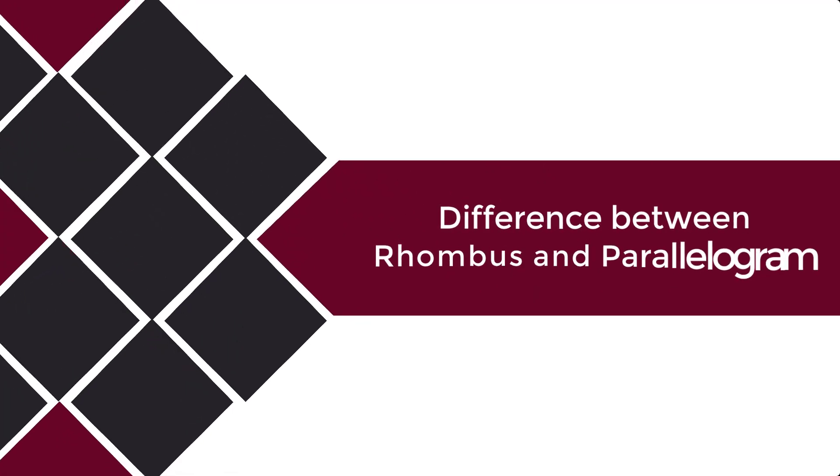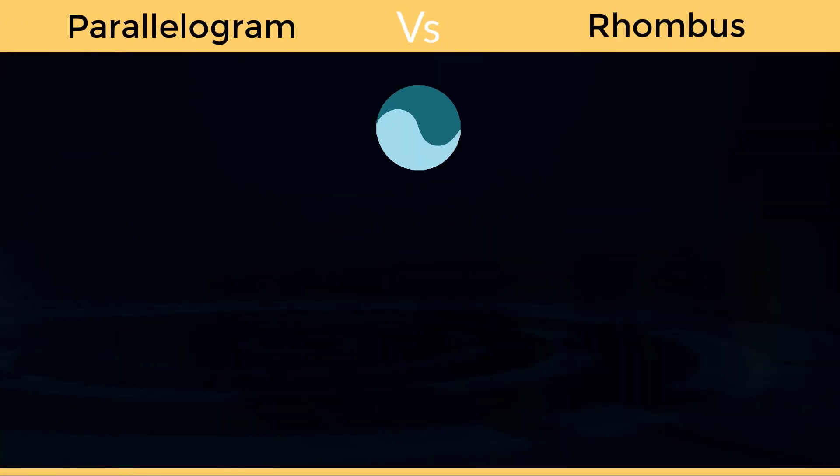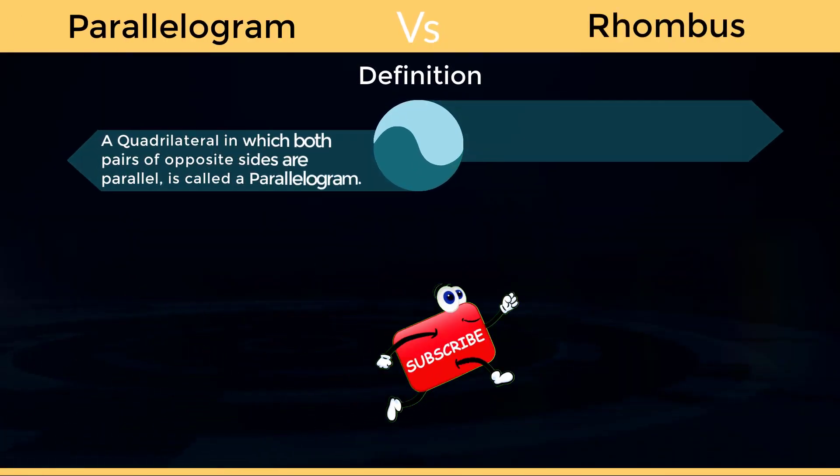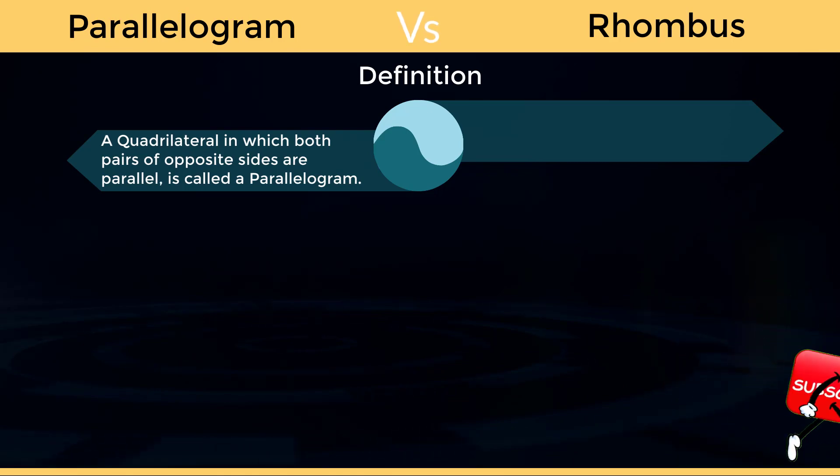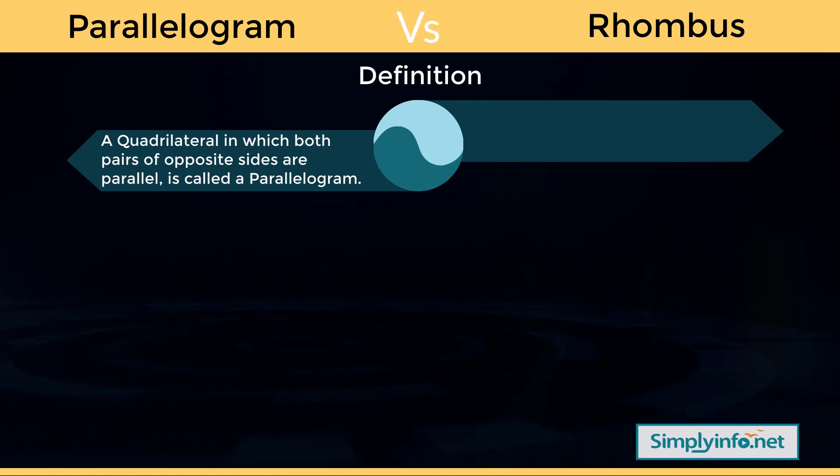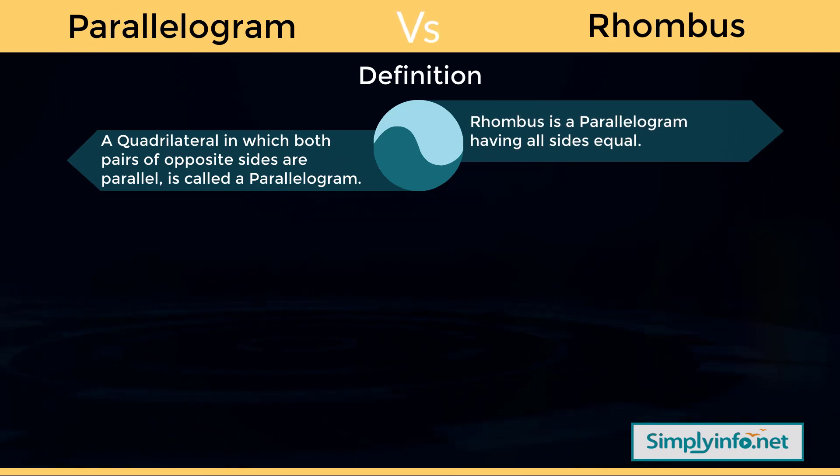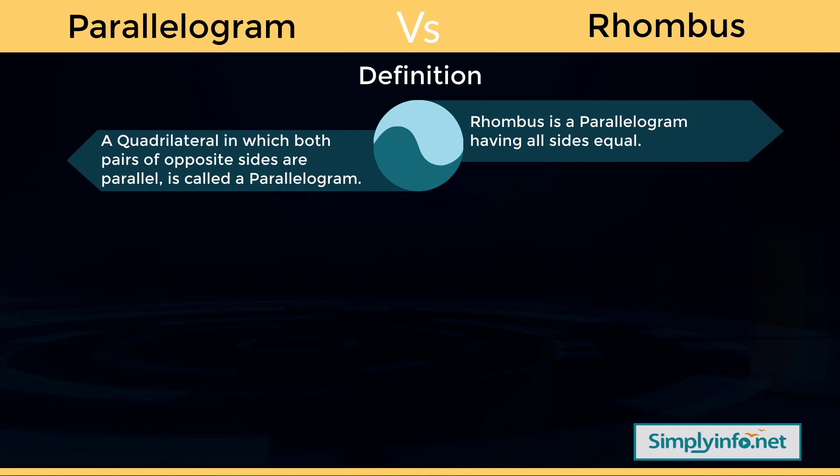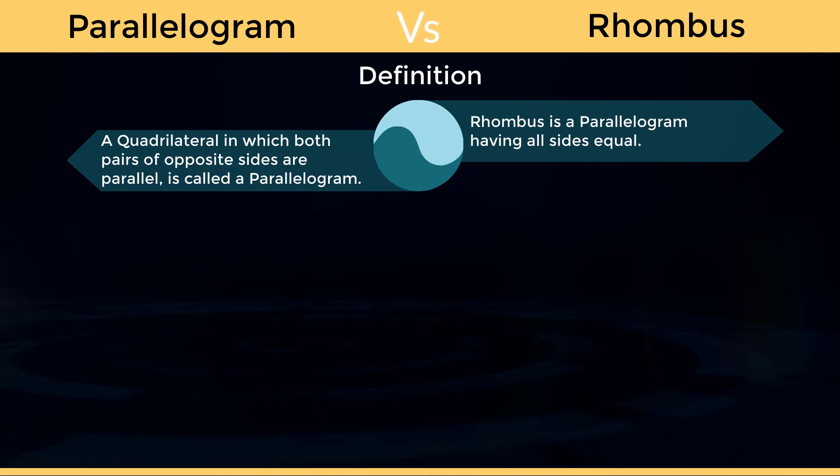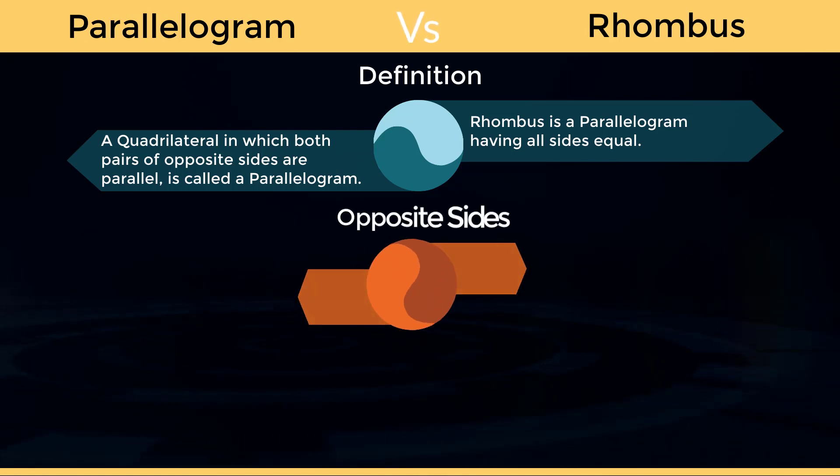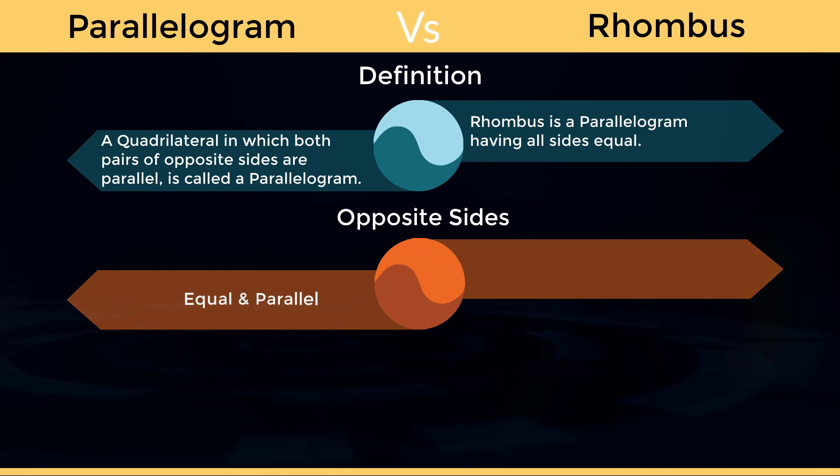Difference between rhombus and parallelogram. Definition for parallelogram: a quadrilateral in which both pairs of opposite sides are parallel is called a parallelogram. Definition for rhombus: rhombus is a parallelogram having all sides equal.